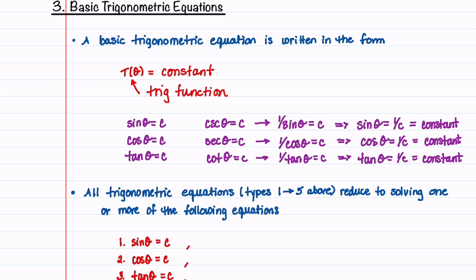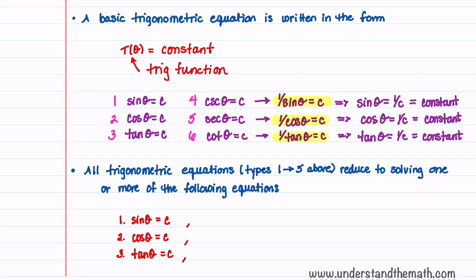There are six different types of trigonometric equations, listed here. Equations 4, 5, and 6 can be written to look like equations 1, 2, and 3 by using a cofunction identity. Because of this, all trigonometric equations reduce to one or more of these three forms: sine θ = c, where c ranges from −1 to 1; cosine θ = c, where c also ranges from −1 to 1; and tangent θ = c, where c can be any number from −∞ to ∞.